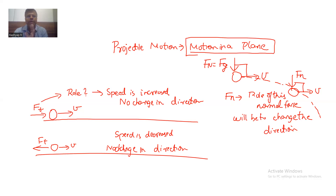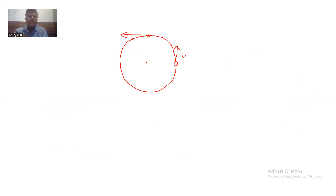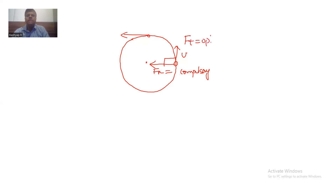Whenever there is a change in direction, we can expect there will be a normal force. For example, in circular motion — where an object goes round and round — there is a tangential velocity that is continuously changing direction. A force perpendicular to the velocity is compulsory; otherwise it is impossible to have circular motion. The normal force is required, while the tangential force is optional — it is not necessary that the body increases or decreases speed in circular motion.